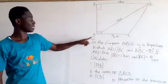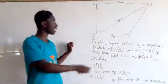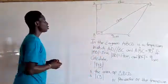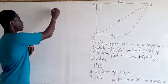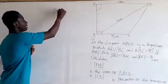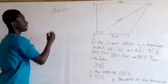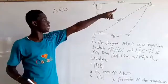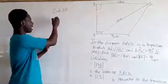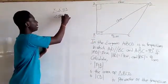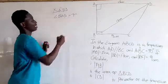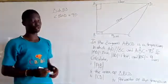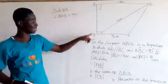To find line AB, we are going to consider triangle ABD. Looking at triangle ABD, angle BAD equals 90 degrees, so we can use the Pythagoras theorem to find line AB.